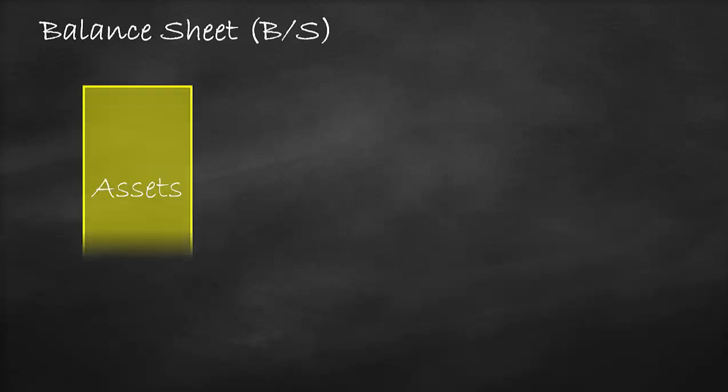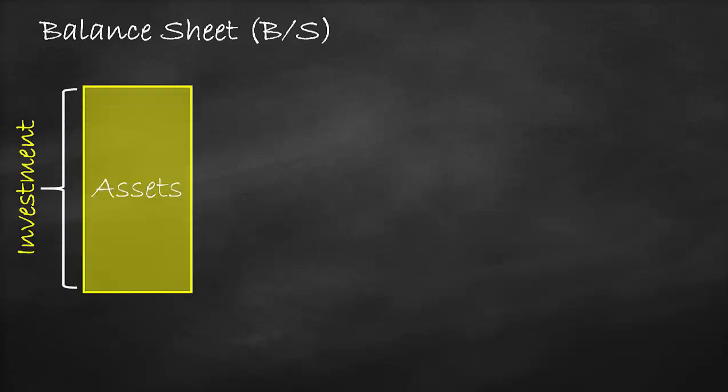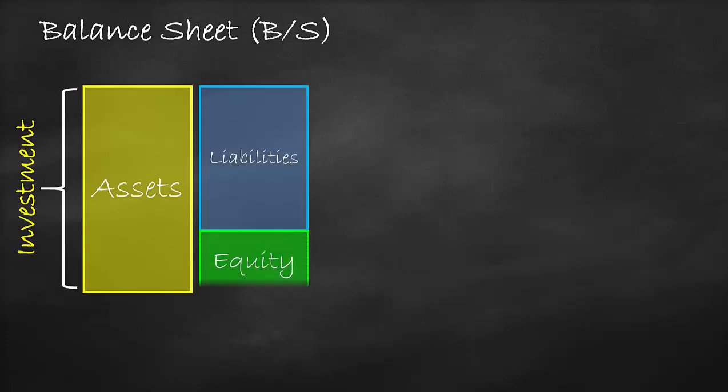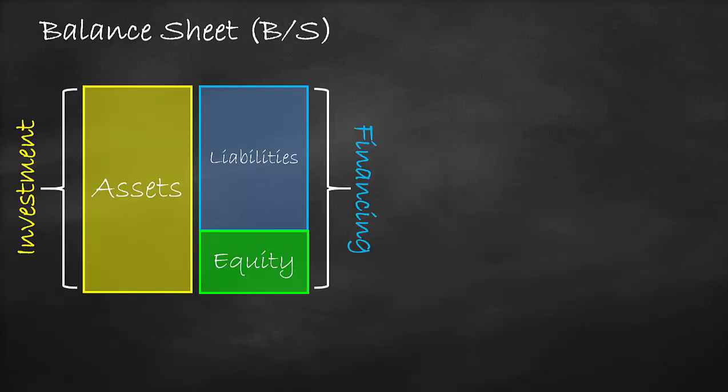In the balance sheet, we have the asset side, which is called investment, as it shows us what the shareholders invest in. We also have the liabilities and equity side, which refers to financing, as it shows us where and how we will finance our company.